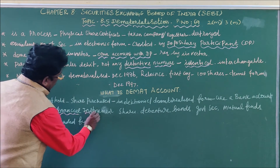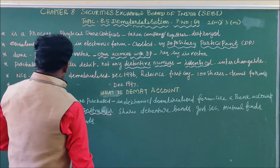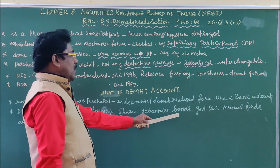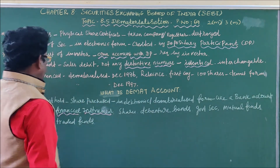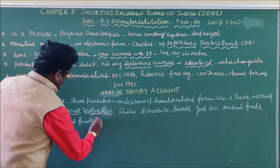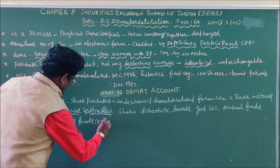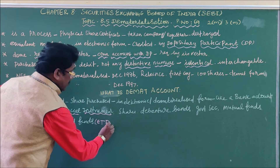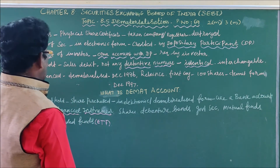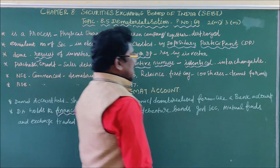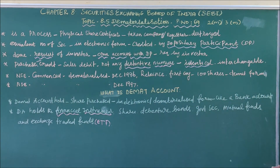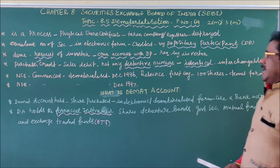The various financial instruments held in a demat account are: shares, debentures, bonds, government securities, mutual funds, and exchange traded funds. These are the financial instruments that are stored in the demat account.